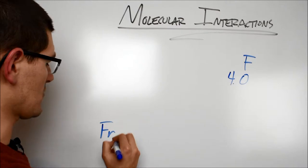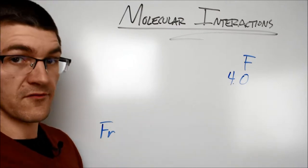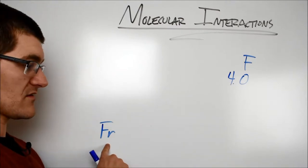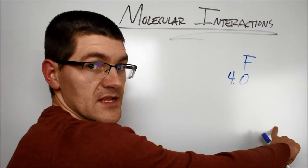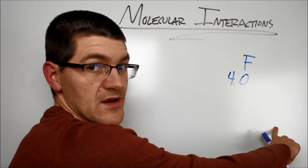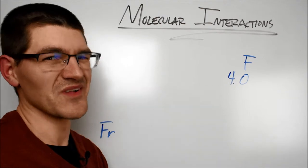On the other side of the periodic table, bottom left, I have something like francium. Francium, on the other hand, wants to get rid of the electron because if it gets rid of that single electron, its valent shell electron configuration moves to the noble gas radon. Again, everybody's happy, stable, big smiles there. So francium's electronegativity is 0.7.